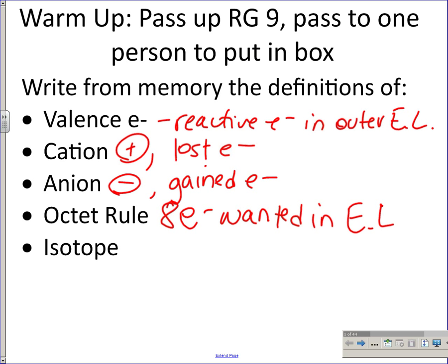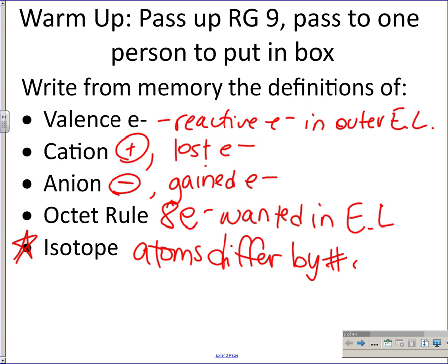Isotopes — we need to know that every single atom in the world is an isotope of a type of element, so everything is an isotope. Atoms can differ by their neutron count — that's the only thing that makes atoms of the same element different.